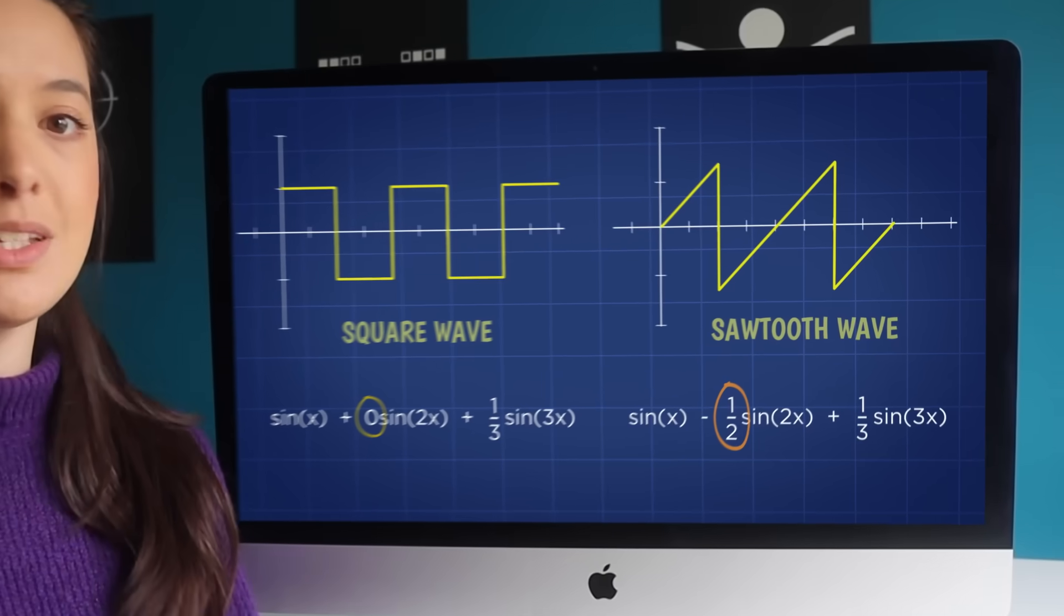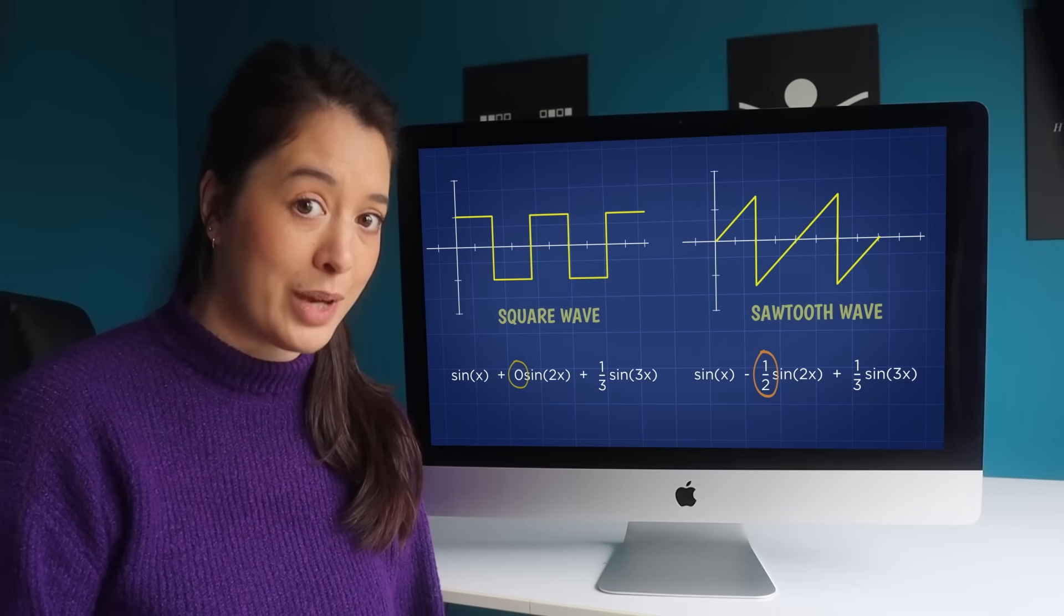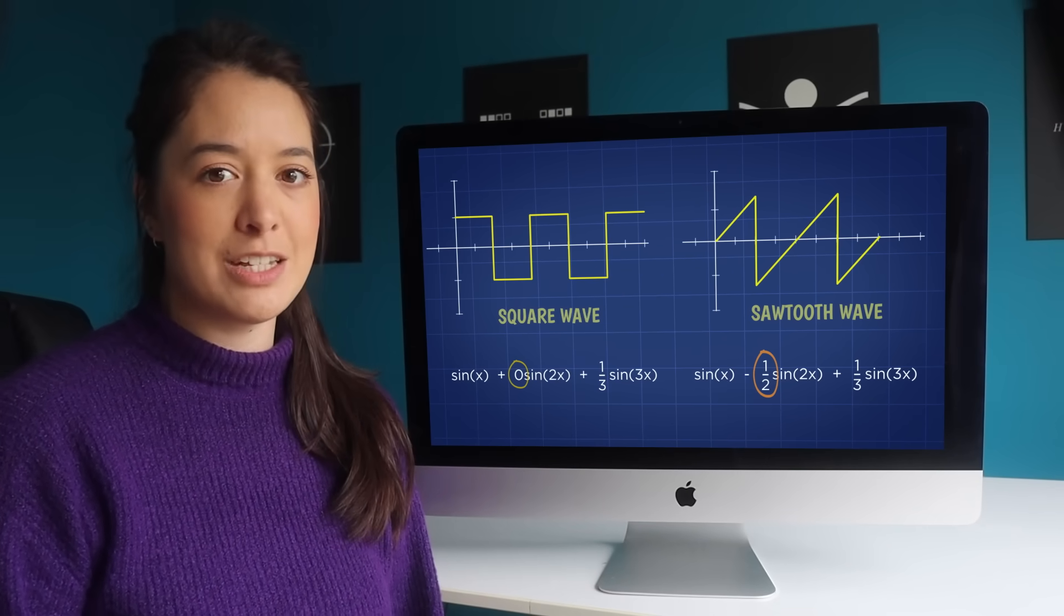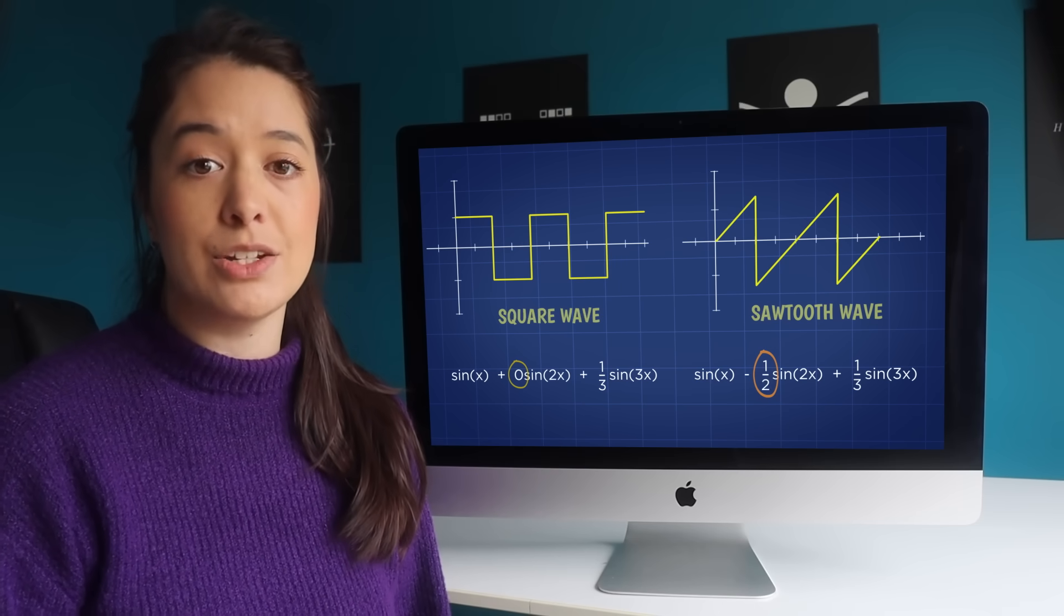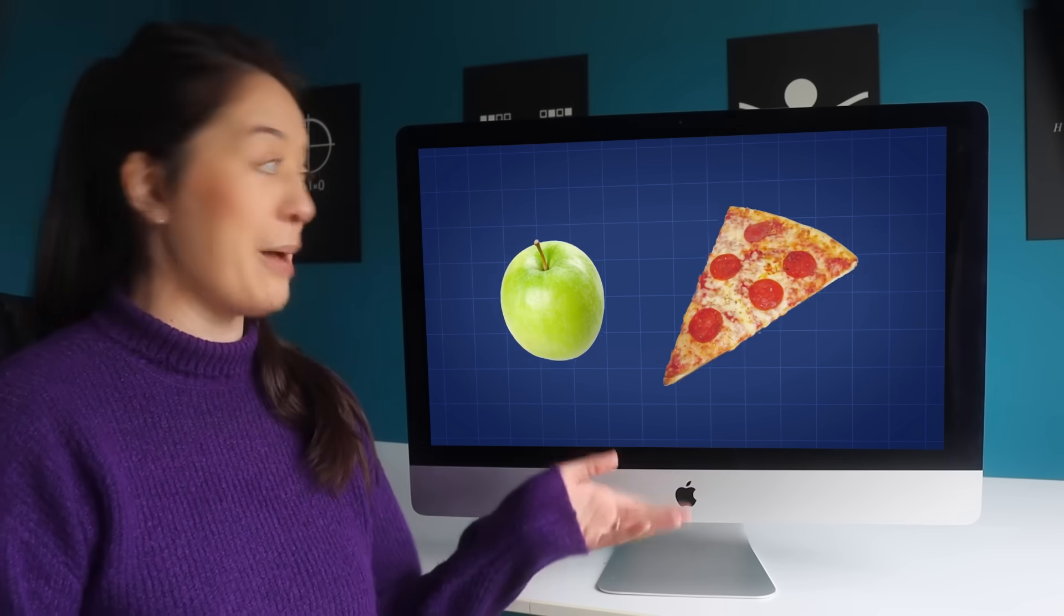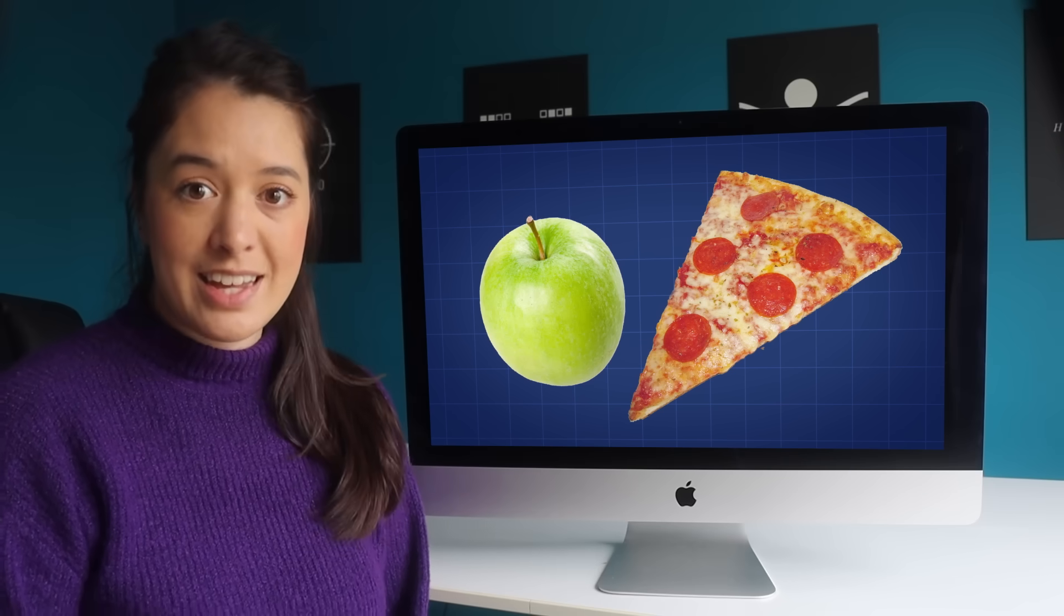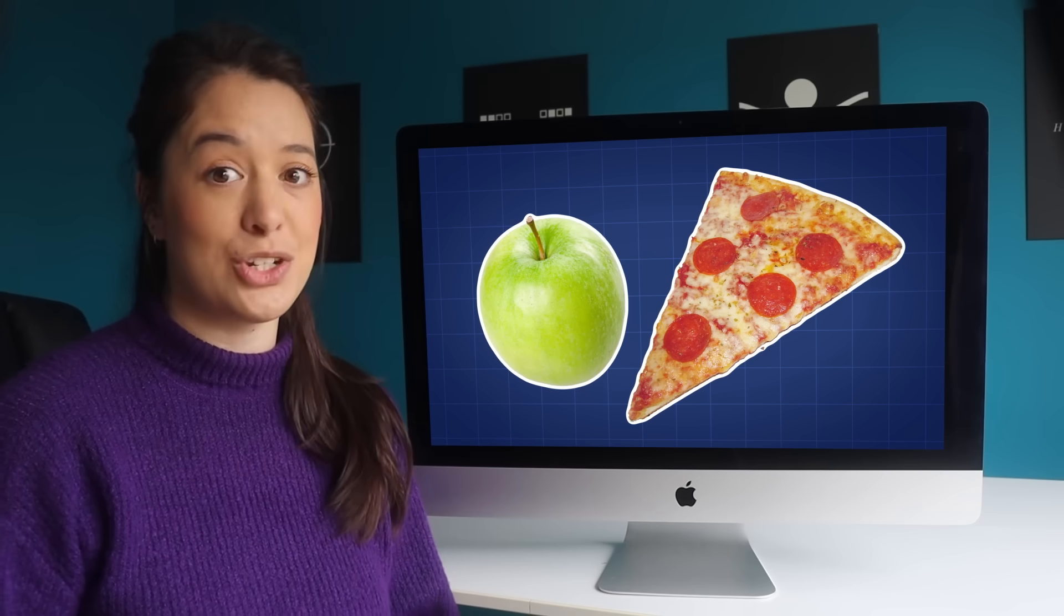Now while it comes to the simple example of finding the difference between a square wave and a sawtooth wave, finding the Fourier series might be more work than it's worth. But the idea can be extended to pattern and shape recognition in general. If you take two objects like an apple and a slice of pizza, their outlines can be analyzed using this technique to figure out which is which.